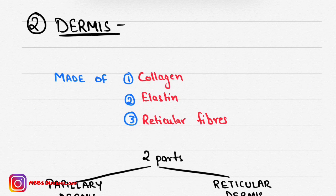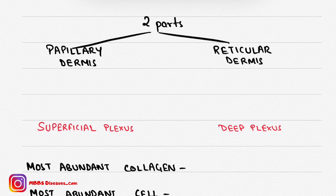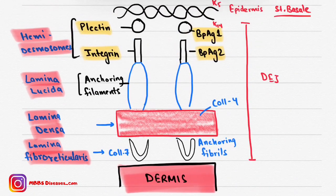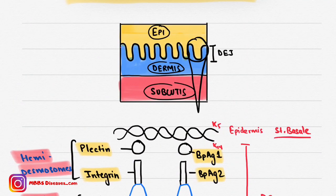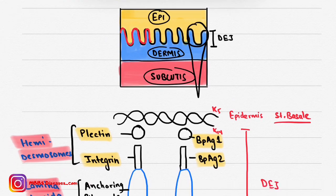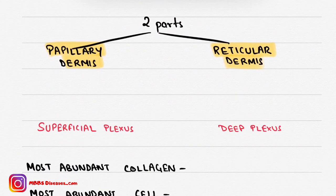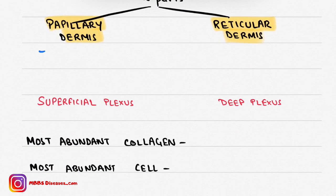The dermis has two parts: papillary dermis and reticular dermis. The upper part is papillary dermis and the lower part is reticular dermis. It is called papillary dermis because it has papillae — the projections visible in the diagram are like papillae, so this upper portion of the dermis is called papillary dermis.